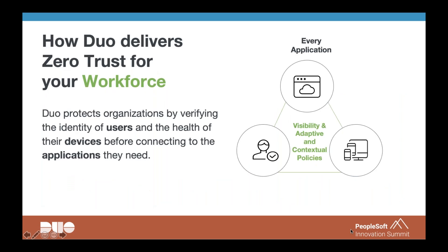How do we deliver Zero Trust for the workforce? If you just walk away with three concepts — user, device, and policy — that's a win. It's really like the three legs of a tripod: multi-factor authentication as the foundational piece for identifying the user, scrutinizing the health and hygiene of the device, and having unique adaptive policies that you define. You determine what your threshold for risk is, and at session level, when a request for access exists, all the checkboxes are being hit in real time.